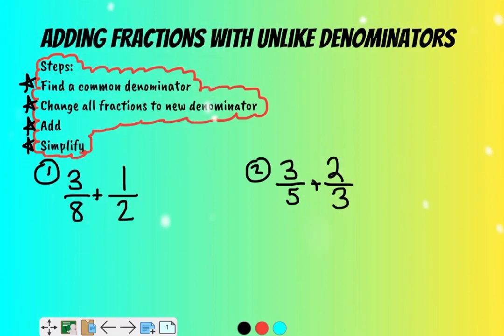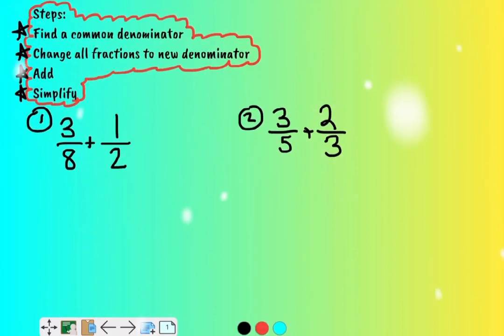So what it means to find a common denominator is this person ordered a pizza, it was broken into eighths, and they ate three slices. This person had a pizza that was broken into halves, and they ate one slice. It's really hard to compare the sizes between the two. So you have to say, what could I change three eighths into and one half into so I know that they have the same size?